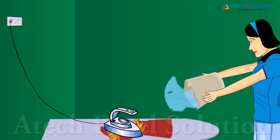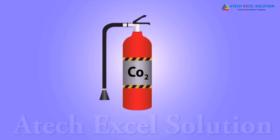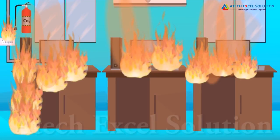Water is also not suitable for fires involving oil and petrol. For fires involving electrical equipment and inflammable materials like petrol, carbon dioxide is the best extinguisher. Carbon dioxide, being heavier than oxygen, covers the fire like a blanket, cutting off oxygen and controlling the fire. Carbon dioxide can be stored at high pressure as a liquid in cylinders — when released, it expands in volume and extinguishes the fire.